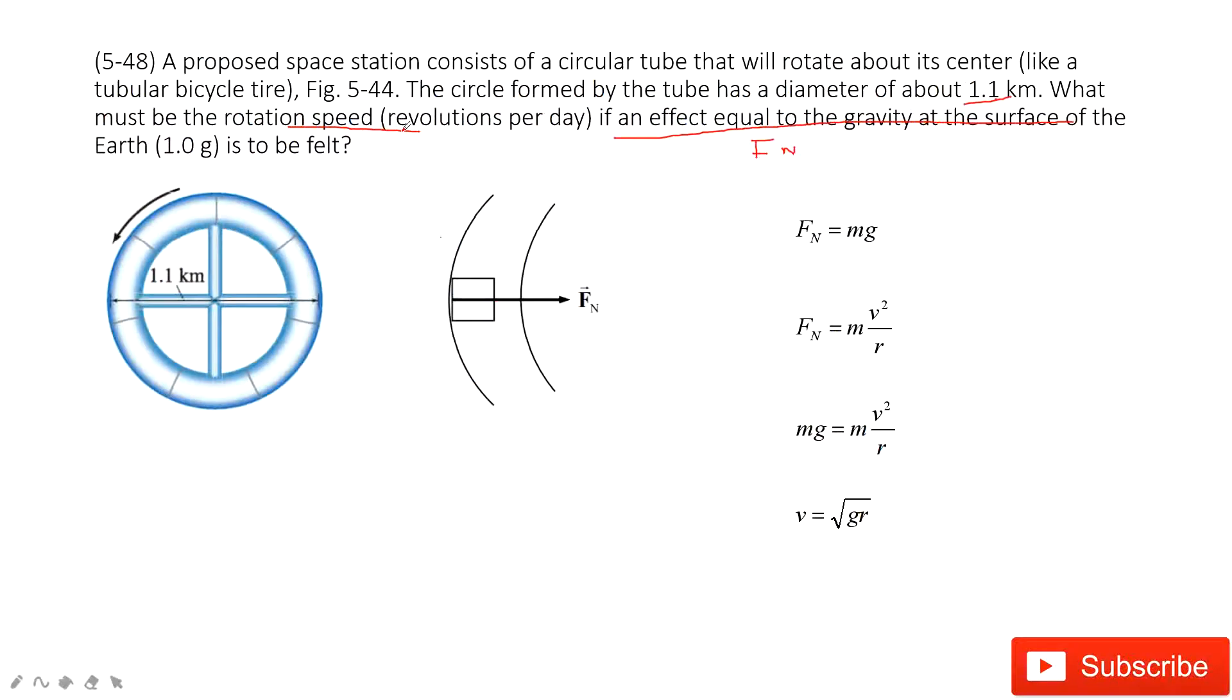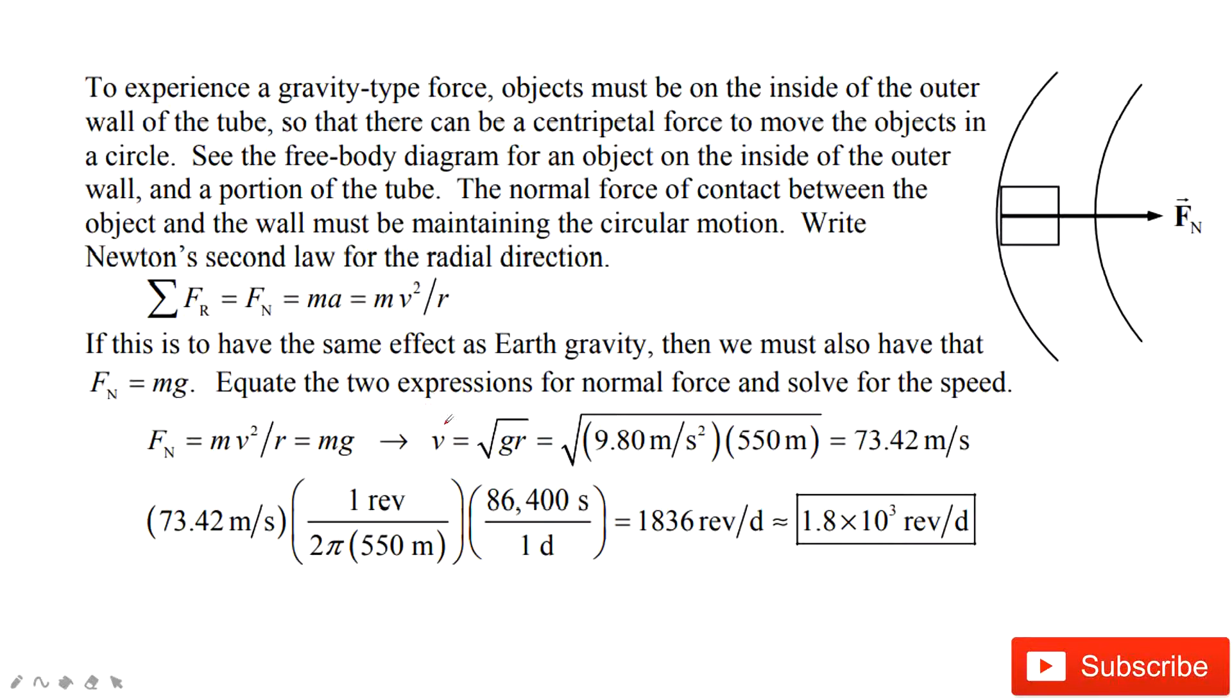But the question asks you for revolutions per day. It is still the velocity, but we can see in one day how much distance this object traveled, just use this velocity times the time for one day. One day is 86,400 seconds. And then for one circle, how much distance it traveled? 2 pi r. In this way, you can find, because in one day the distance traveled by this object divided by the distance for one circle, you can find this revolution per day.